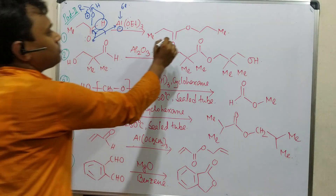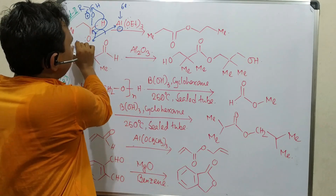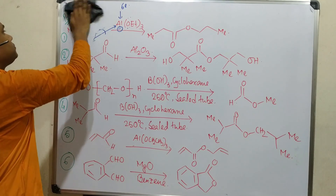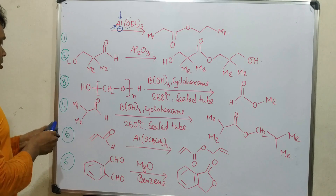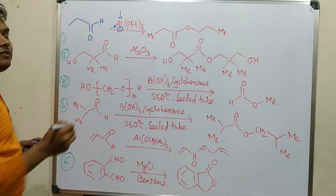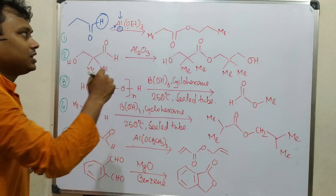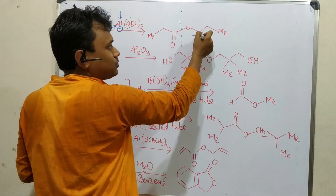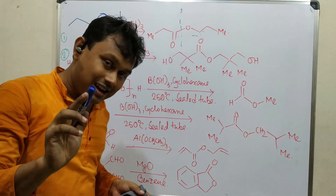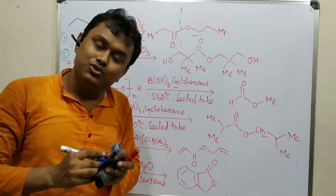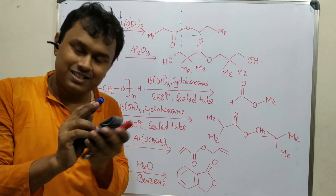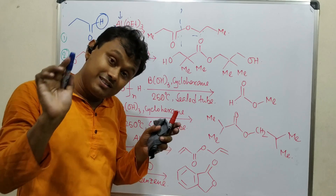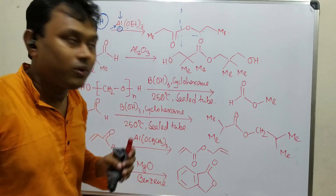So in this way the ester is produced. One trick I want to share: always keep in mind that whatever aldehyde is given, you remove the aldehyde hydrogen, put one oxygen, and reduce the other aldehyde. You can see this is one half and this is the other half. So one aldehyde is oxidized to carboxylic acid and the other is reduced to an alcohol — and they combine to form the ester.